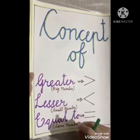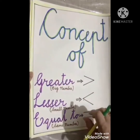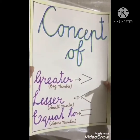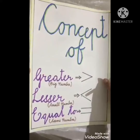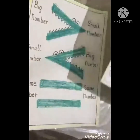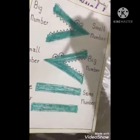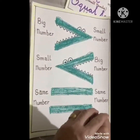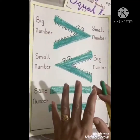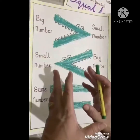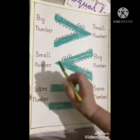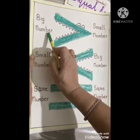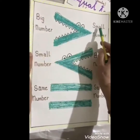This is again a complex concept, so to help you understand it better I will tell you a story. This is the story of an alligator. Look children — we have an alligator which is very greedy. It always tends to eat a bigger number and opens its mouth towards the bigger number.